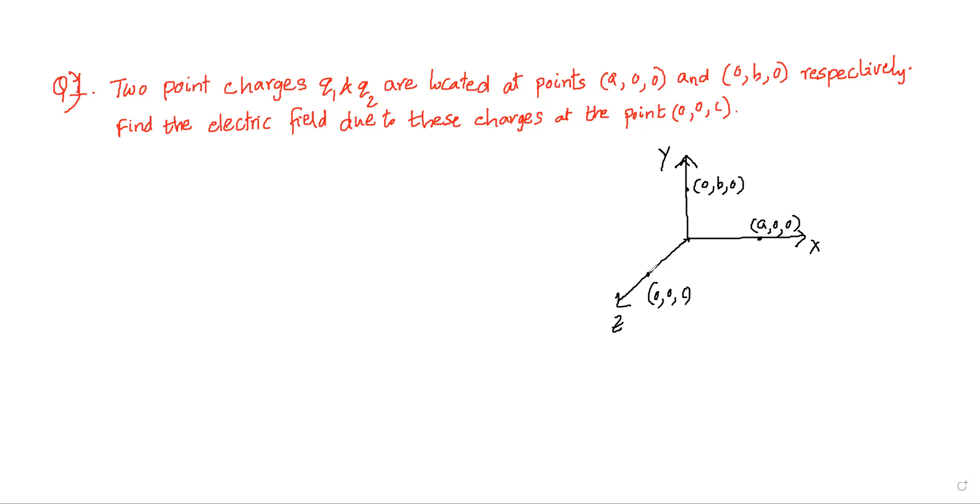Now between point (0,0,C) and (A,0,0), let's say some distance that is R1. And let's say this is Q1 point and this is Q2 point and this is Q3 charge point over here. So between these two, the distance is R2.